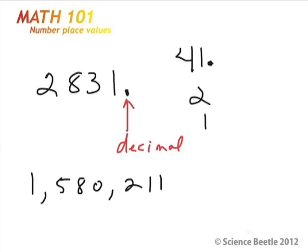So it's at the end of the 41. It's at the end of the 2. It's at the end of the 1. And it's at the end of this 1,580,211. The decimal is always there in each of these cases. So it's important that you recognize that irregardless of how you write the number, the decimal is always there.